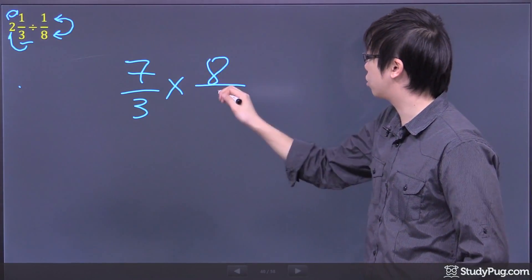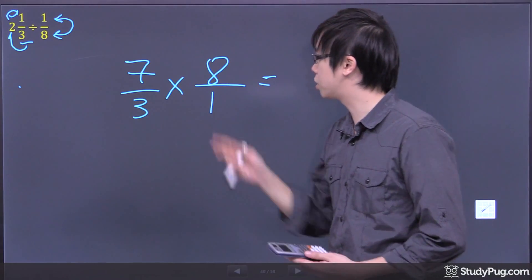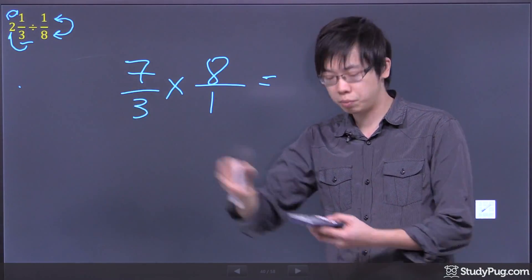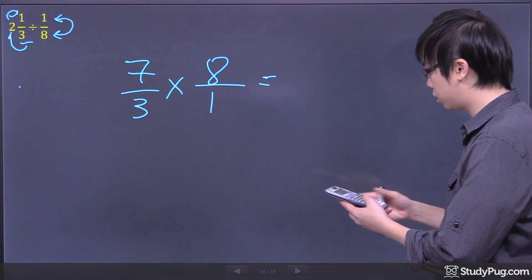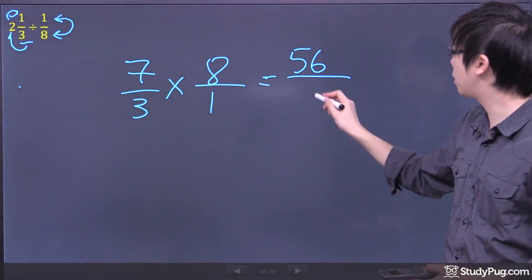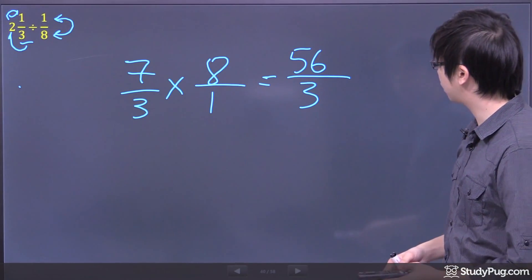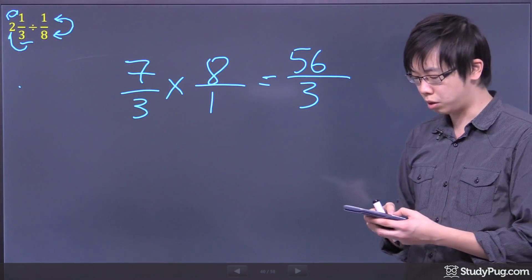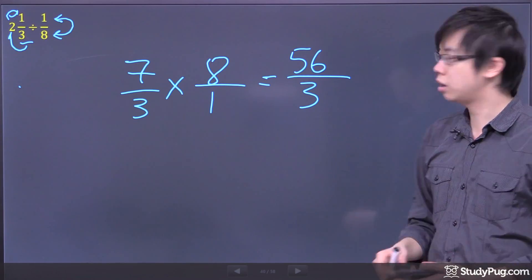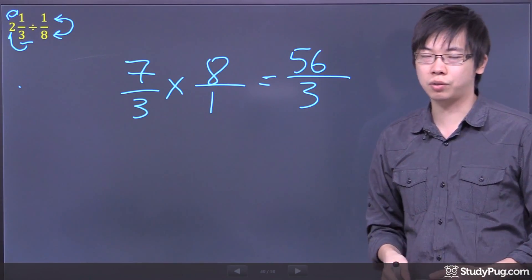So the final answer would be just the 8 times 7 across the top, which is 56, and divided by the 3 underneath. And it looks like a nice number, maybe it will work out. Maybe it wouldn't. Actually it wouldn't, sorry about that. So 56/3 is your final answer for this question.